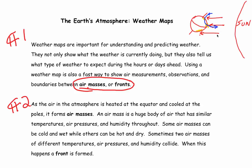Review the videos that have to do with the global wind patterns; that will help you understand how air moves globally on the planet. Paragraph two: as the air in the atmosphere is heated at the equator and cooled at the poles, it forms air masses. These air masses are what we call pressure systems. An air mass is a huge body of air that has similar temperatures, air pressures, and humidity throughout.